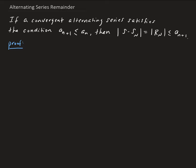So R_n is just the residual — the difference between the actual sum and the nth partial terms. S is our alternating series, starting from one.